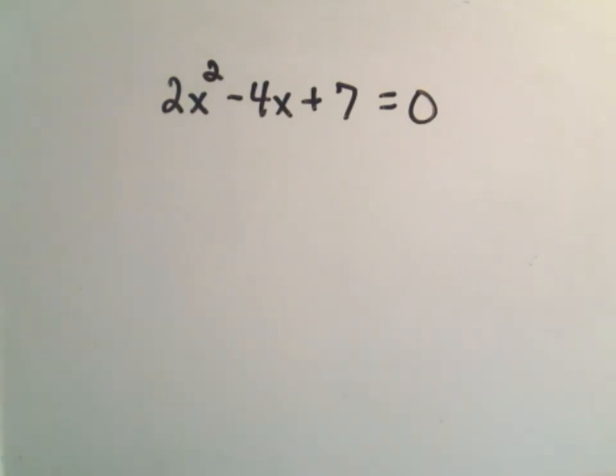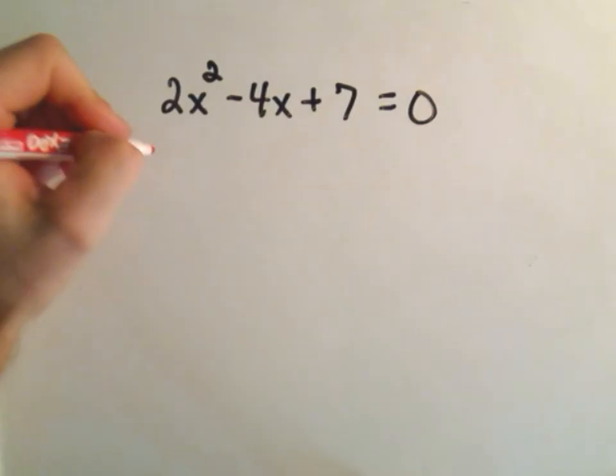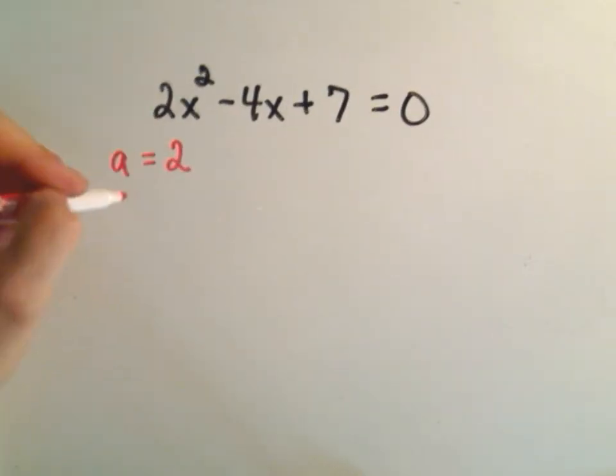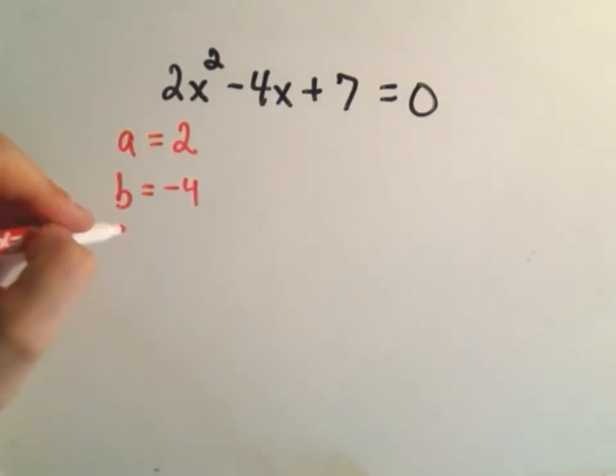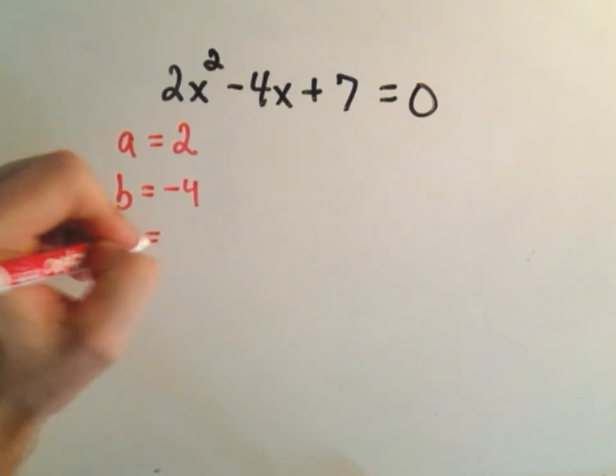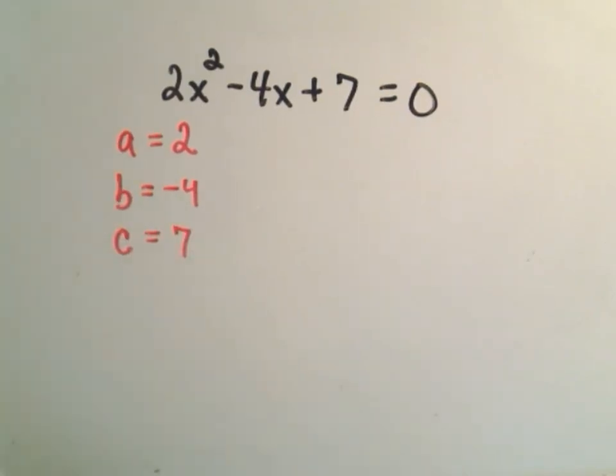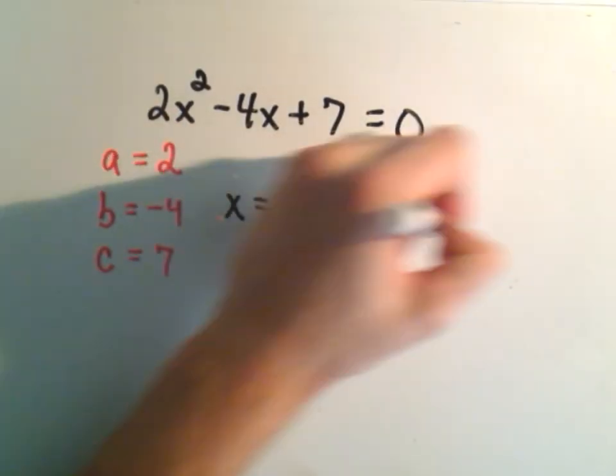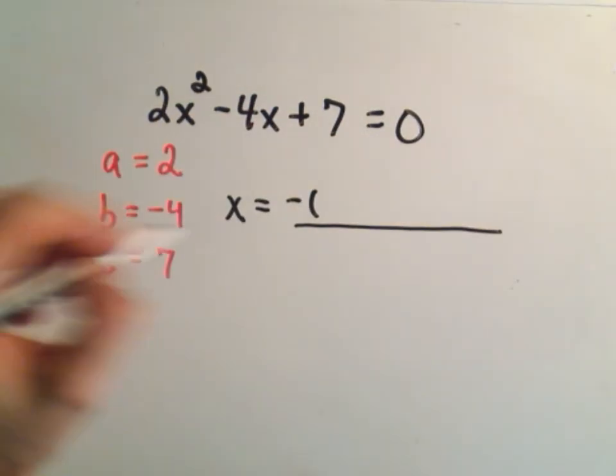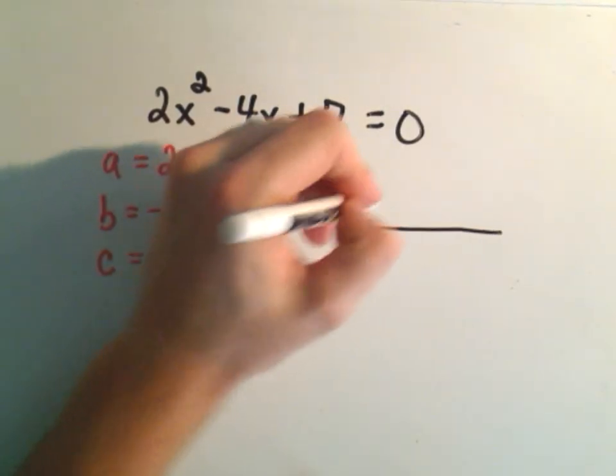My a value is whatever's in front of x squared, so that's 2. The b value is -4, and the c value is 7. My solutions are x equals...